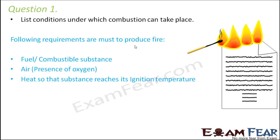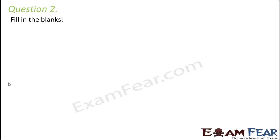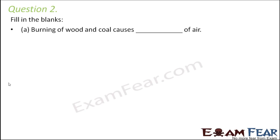The third requirement is heat. This heat will increase the temperature of the substance so that it can reach its ignition temperature. Ignition temperature varies for each substance, and it is that minimum temperature at which a substance catches fire. These are the three things which are extremely necessary for combustion to happen.